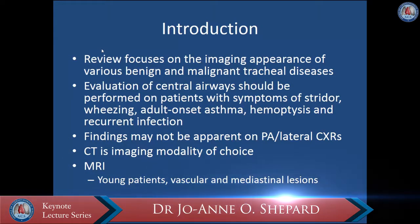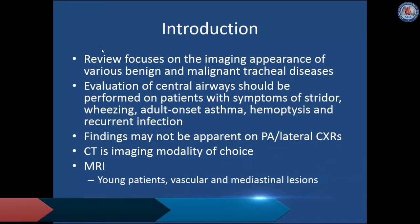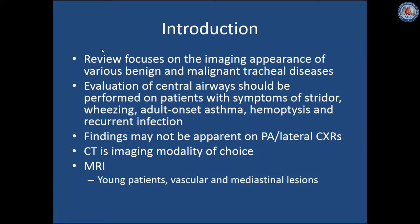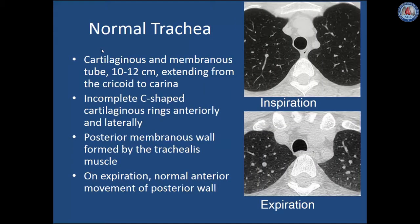While the chest radiograph is the examination of choice for screening patients with these findings, abnormalities may not be apparent on the chest radiograph, and additional imaging is usually necessary. CT is the imaging modality of choice in this case. Occasionally, MRI is useful, particularly in young patients to spare ionizing radiation, or in patients with vascular or mediastinal lesions.